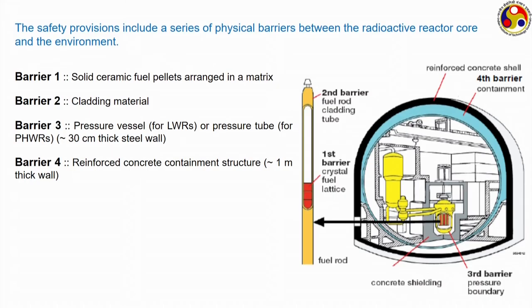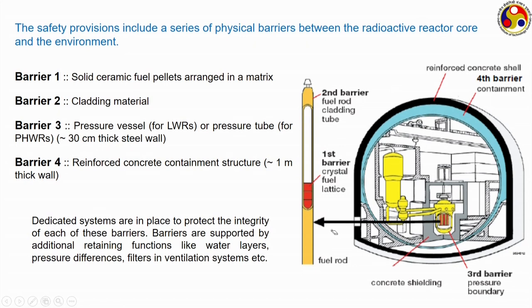A typical diagram shows all four barriers: the crystal fuel structure inside the fuel rod forms the first barrier; the cladding jacket around the fuel is the second; the fuel rods are placed inside the pressure vessel as the third barrier; and the containment structure outside is the fourth. All these barriers have dedicated systems to protect their integrity, supported by retaining functions like water layers, pressure differences, and filters in ventilation systems.